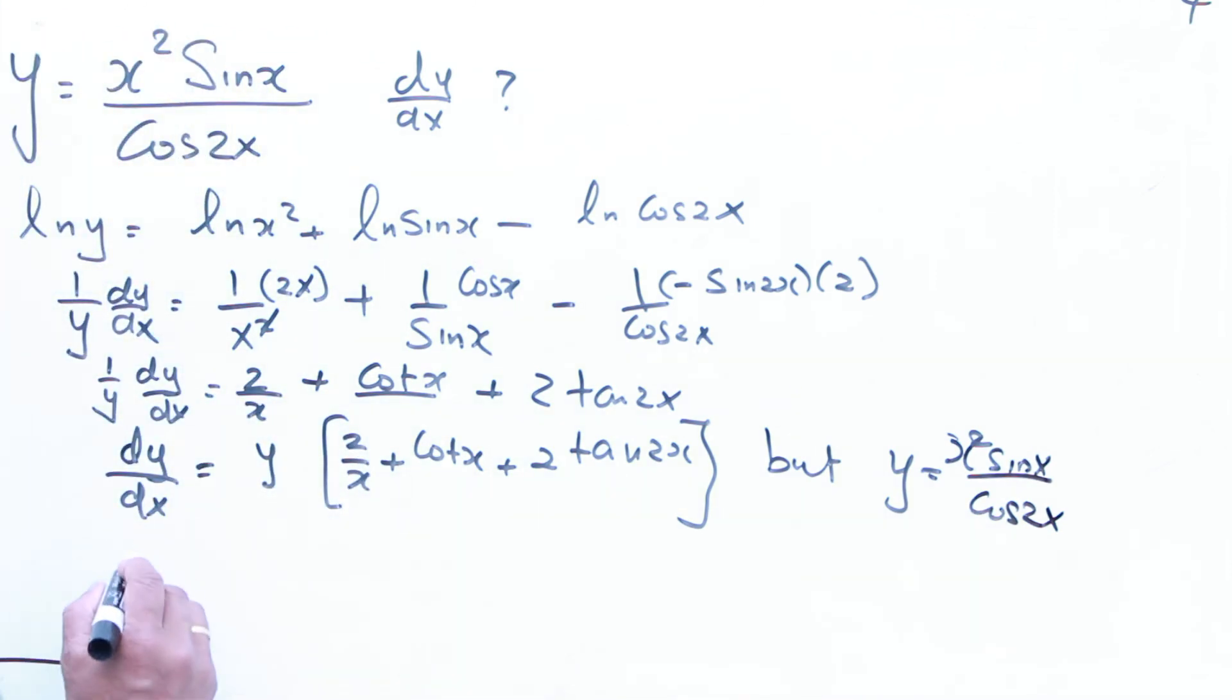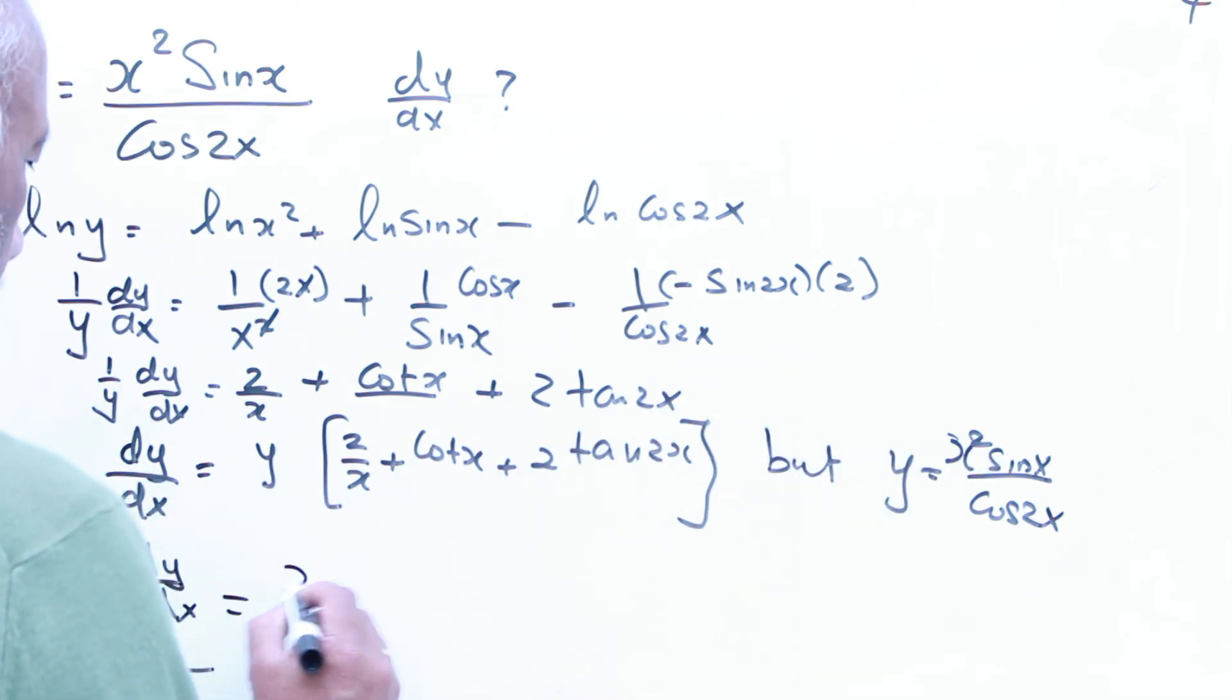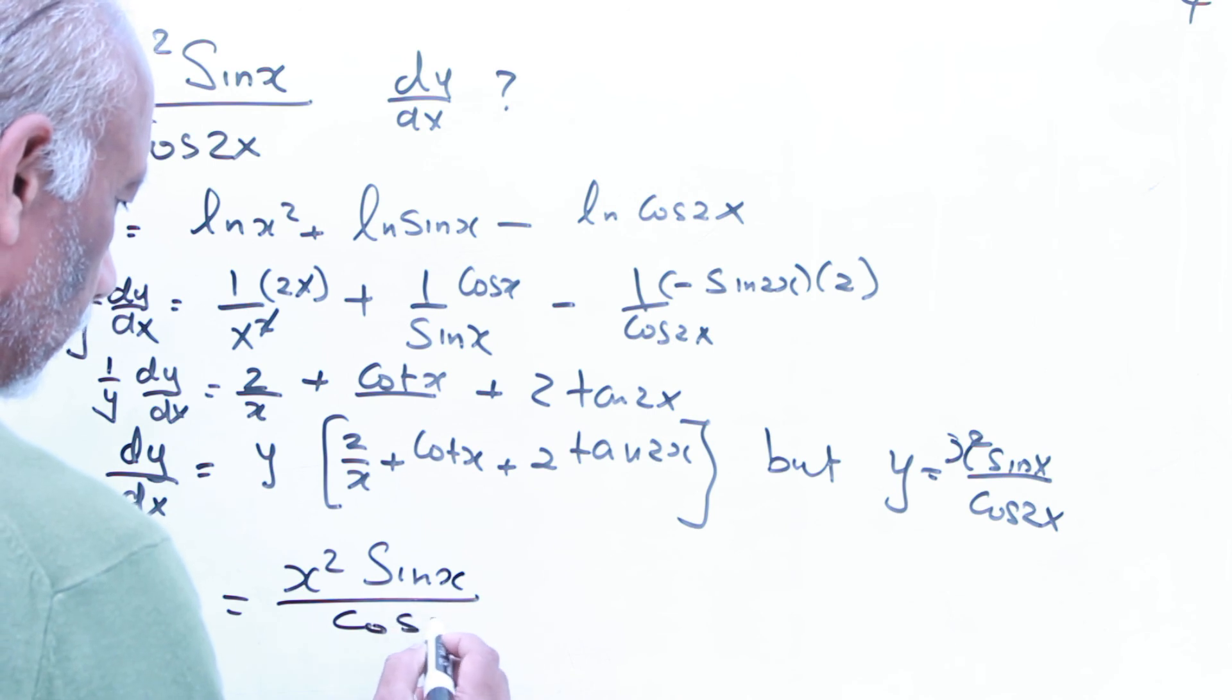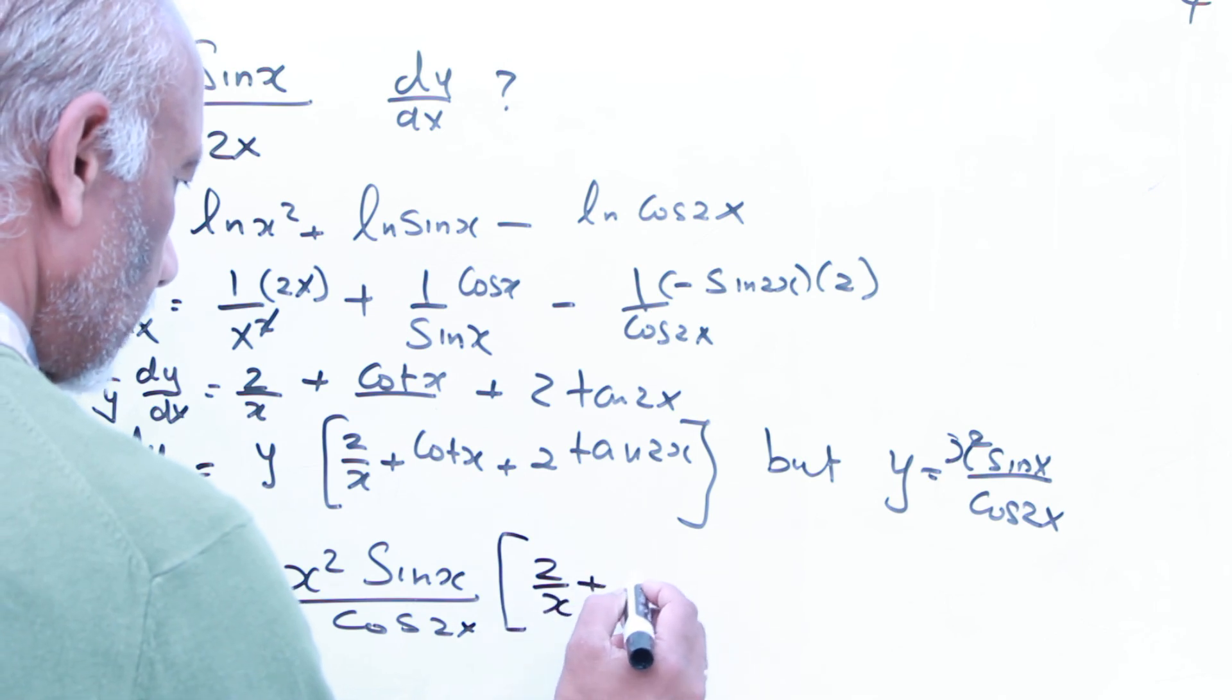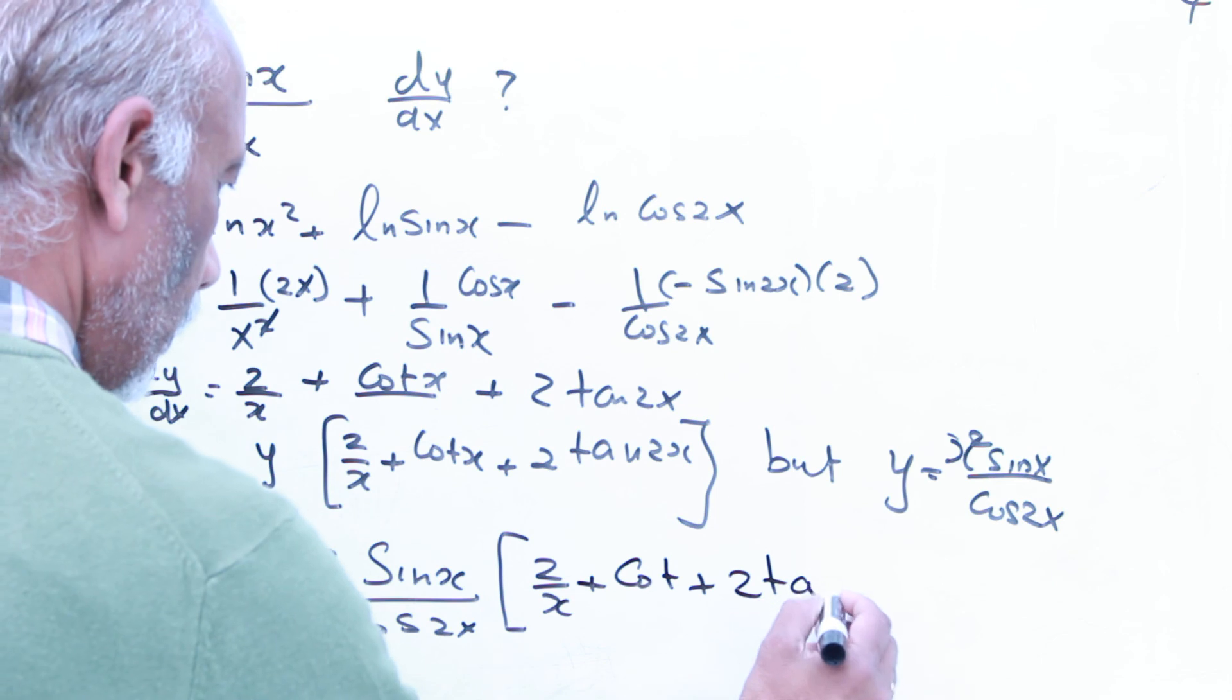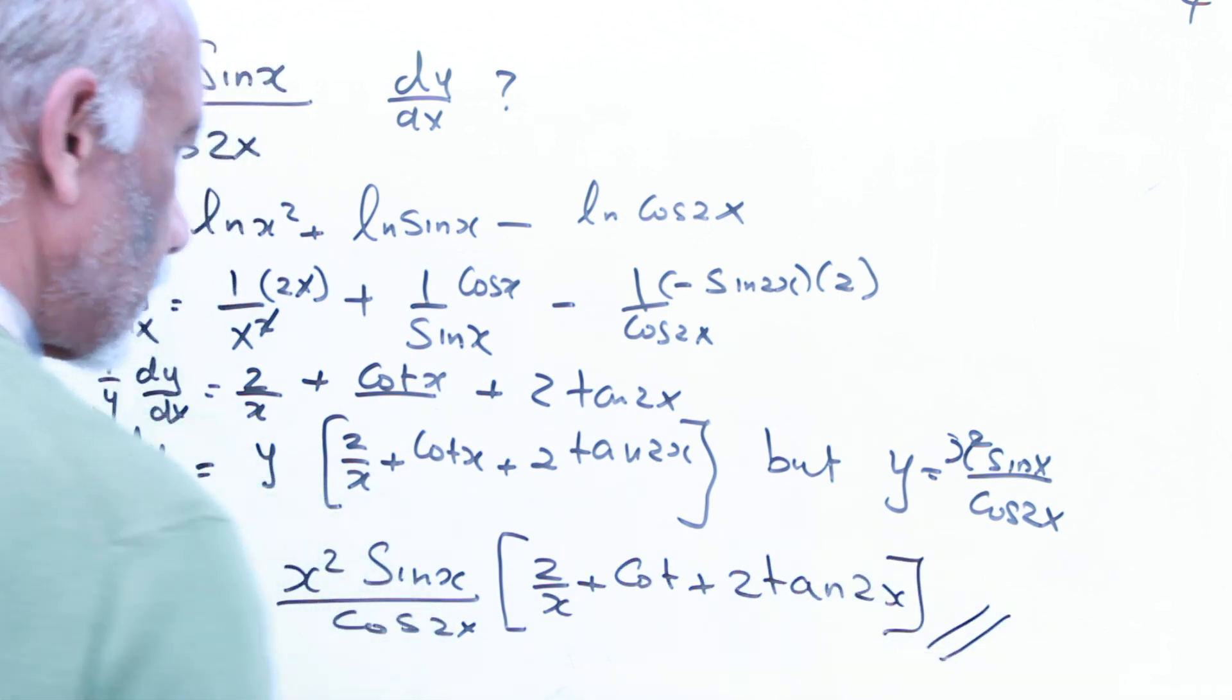Therefore, the final answer will be equal to dy by dx equal to, instead of y, I'm going to put that one, x squared sin x over cos 2x, times 2 over x, plus cot x, plus 2 tan 2x. So, that will be the final answer for this particular question.